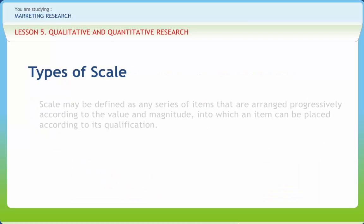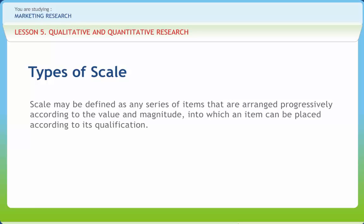A scale may be defined as any series of items arranged progressively according to value and magnitude, into which an item can be placed according to its qualification. There are various types of scales. The Nominal Scale is one in which numbers or letters assigned to objects serve as labels for identification or classification. It is also called the Yes or No Scale, used in research activities such as terms used for colors.